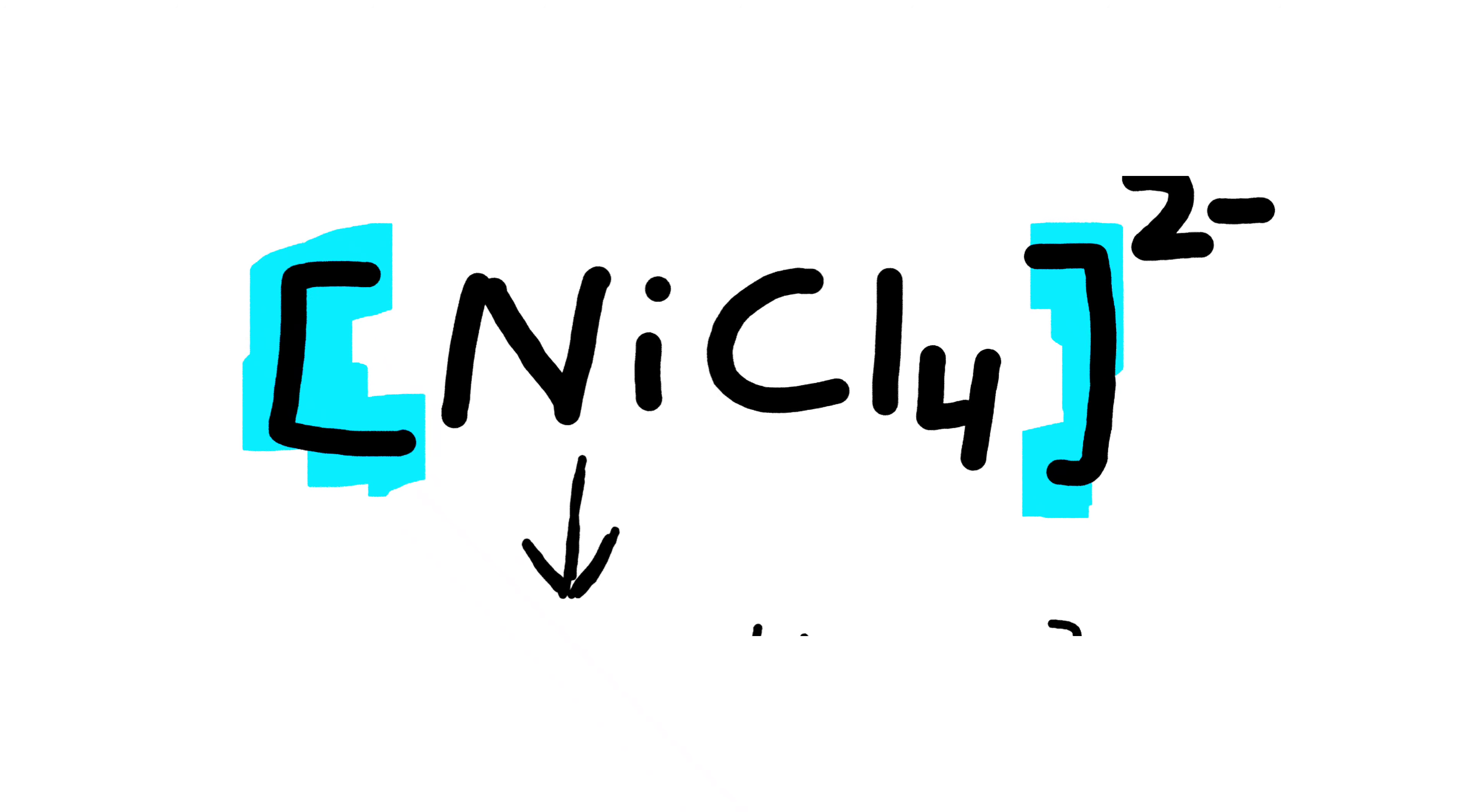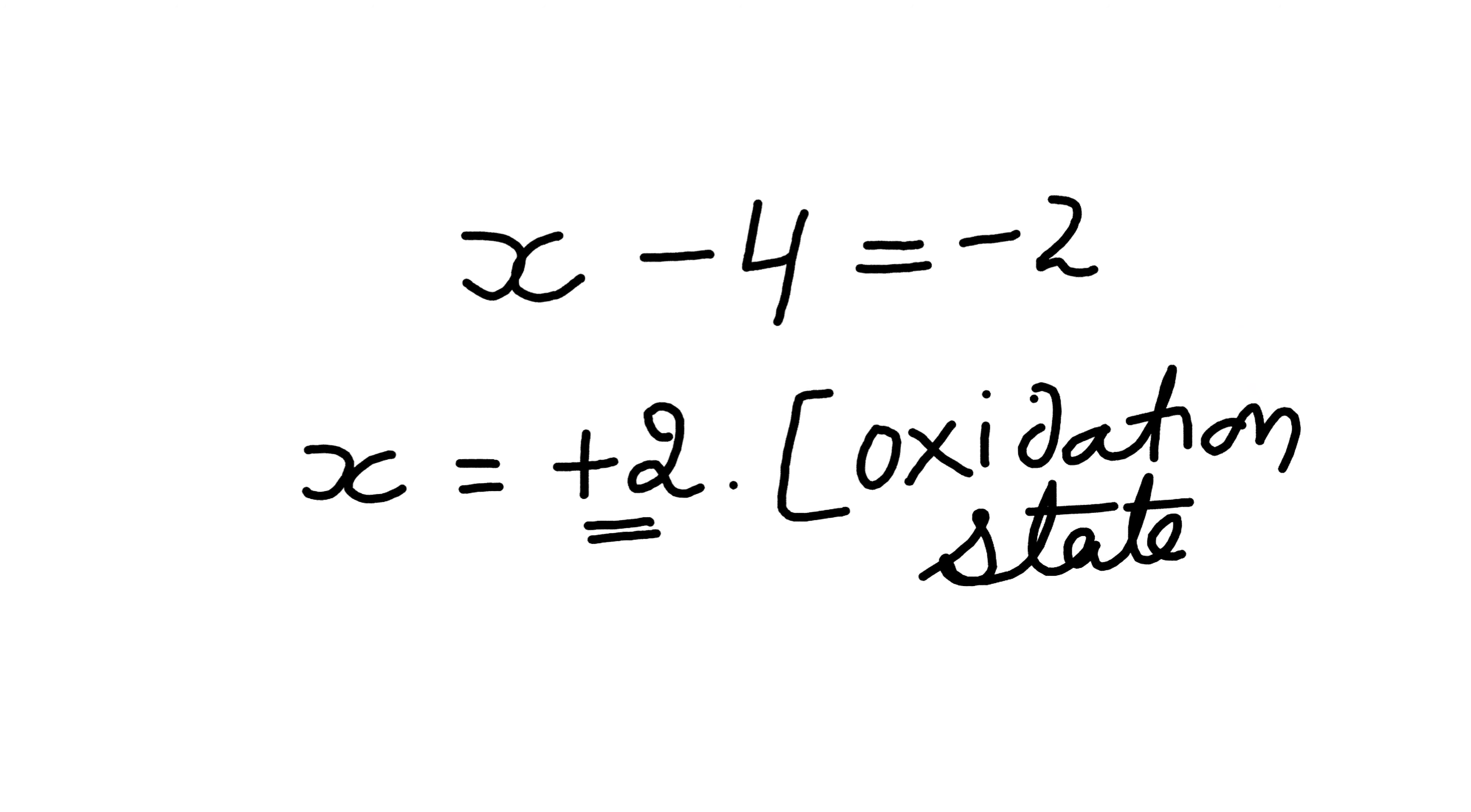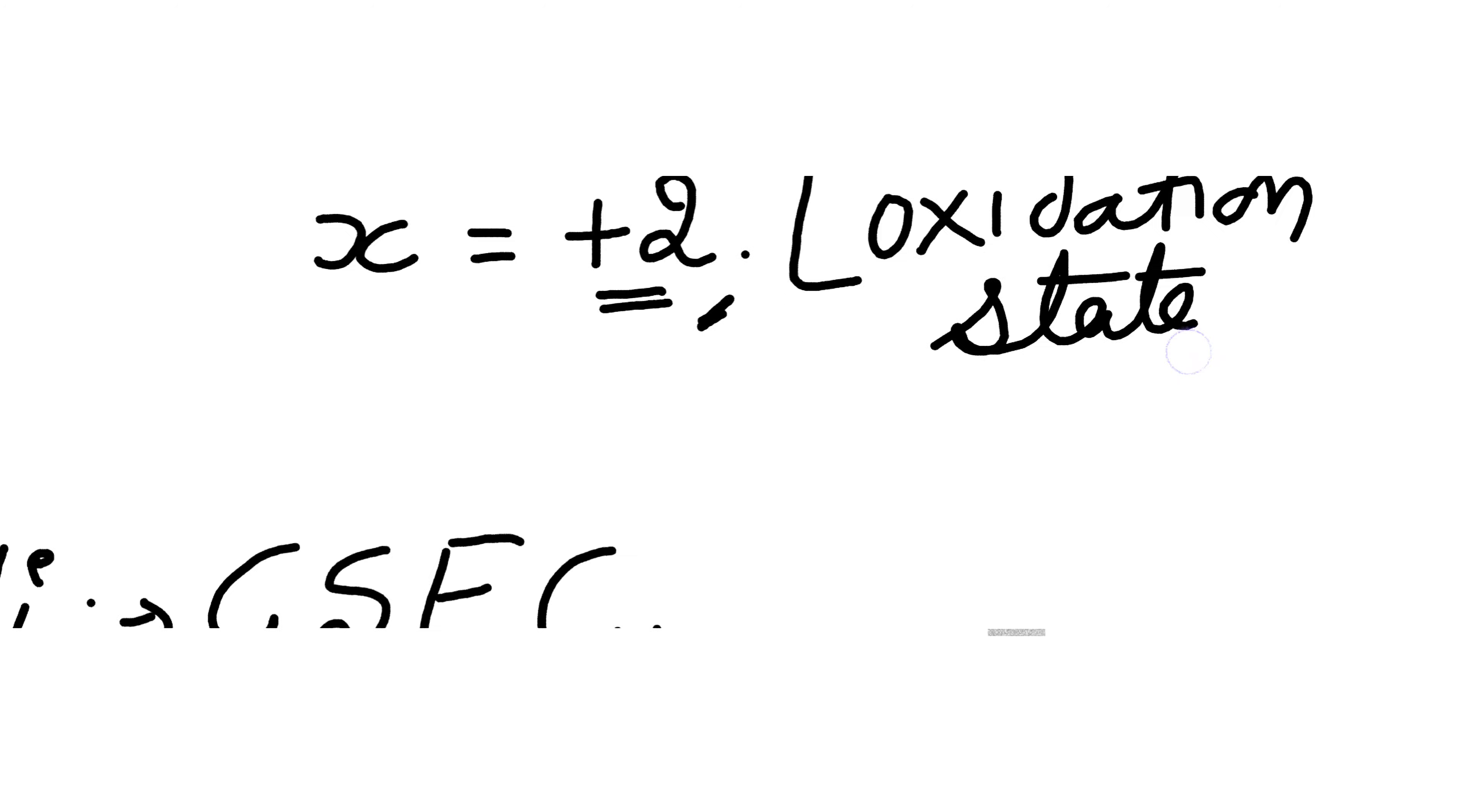Now let's learn about the complex NiCl4 2-. First, let's find the oxidation state of nickel. That will be X minus 4 equals minus 2, as chlorine has a minus 1 charge. So X comes out to be plus 2. The oxidation state of nickel in this complex is plus 2.